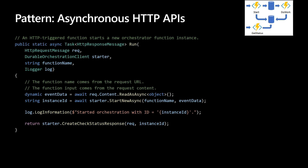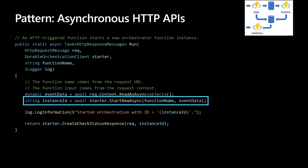The async HTTP API pattern addresses a problem coordinating the state of long-running operations with external clients. A common way to implement this pattern is by having an HTTP call trigger the long-running action, then redirect the client to a status endpoint. The client polls to learn when the operation is finished. In our scenario, we're going to start a new async and then use starter.CreateCheckStatusResponse, which will allow the user to poll Azure Durable Functions for updates on our process.